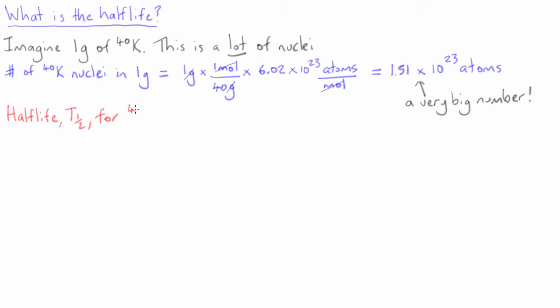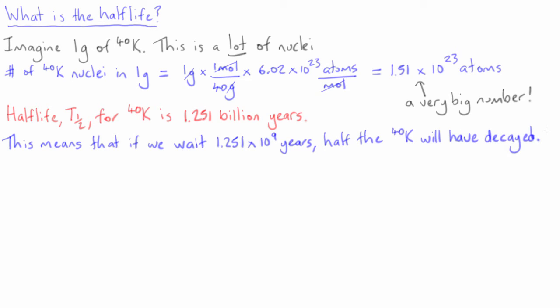Now the half-life of potassium-40 is 1.251 billion years. The half-life means that if we wait for 1.251 billion years, half of the potassium-40 will have decayed. This is related to the fact that the probability of decay per unit time is constant. If we know this probability, then we can predict how long it will take for half of the nuclei to decay, and this length of time is the half-life.